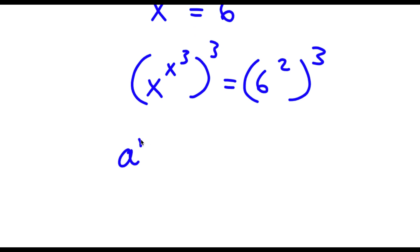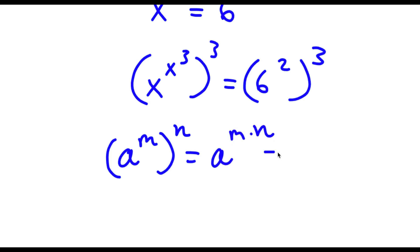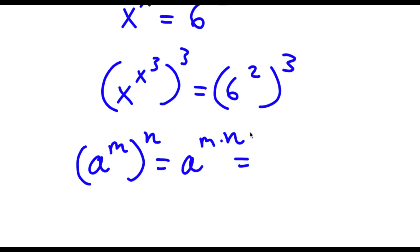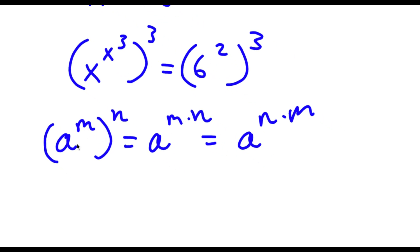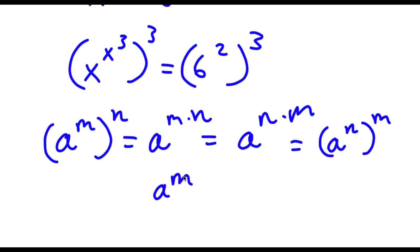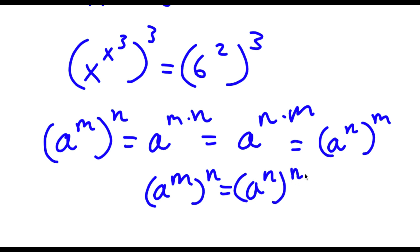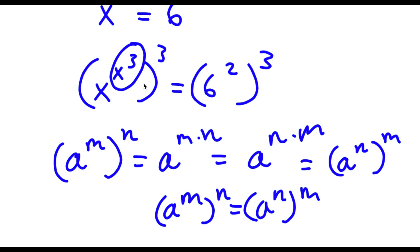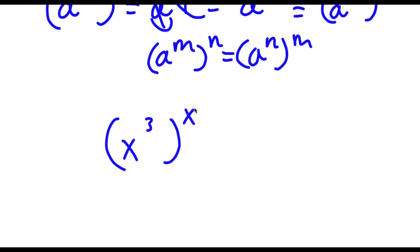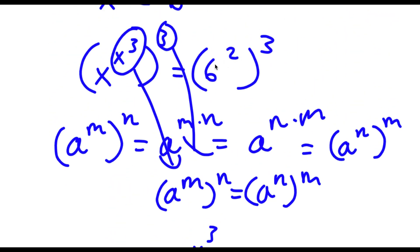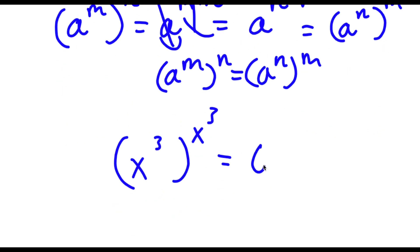Now if I have something in the form a to the power of m to the power of n, this is the same thing as a to the power of m times n. And m and n are interchangeable, meaning this can also equal a to the power of n times m, so a to the power of m to the power of n equals a to the power of n to the power of m. So in this case we can think of x to the power of 3 as m and 3 as n. Swapping these gives x to the power of 3 to the power of x to the power of 3. And on the right side, 6 to the power of 2 to the power of 3 is the same thing as 6 to the power of 2 times 3, which equals 6 to the power of 6.